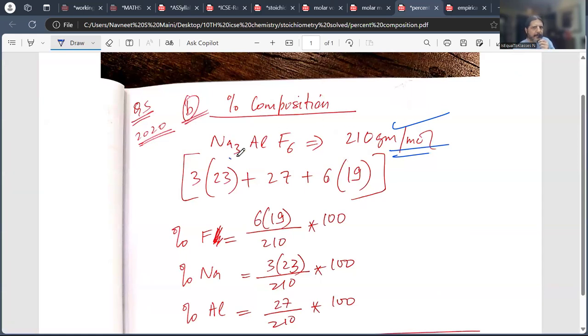How will it be? 3 into molar mass of sodium, 1 into 27, 6 into 19. So what will the fluorine percentage be? What will it do?